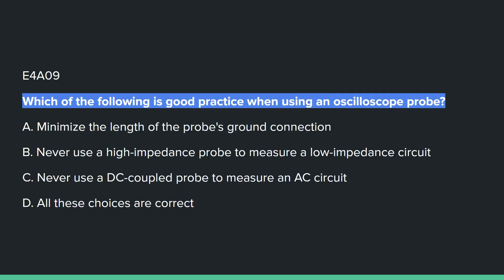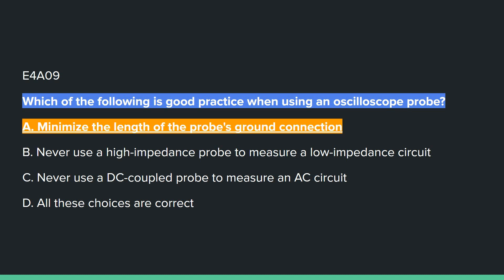E4A09: Which of the following is good practice when using an oscilloscope probe? Answer A: minimize the length of the probe's ground connection.